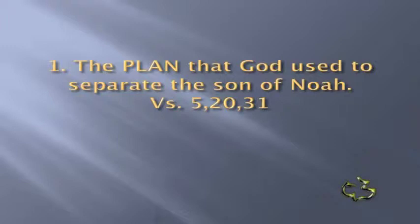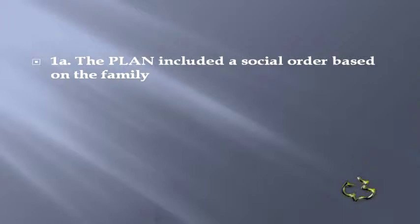God's plan to separate the sons of Noah becomes critical. Verse 5: 'From these, the coastland peoples of the Gentiles were separated into their lands, everyone according to his language, according to their families, into their nations.' Verse 20 says the same of Ham's sons, and verse 31 the same of Shem's sons. So God's plan included social order based upon the family.